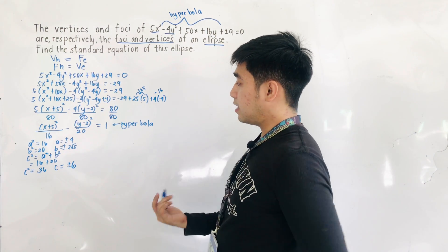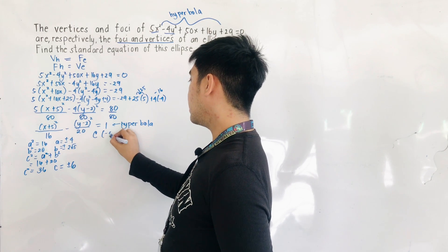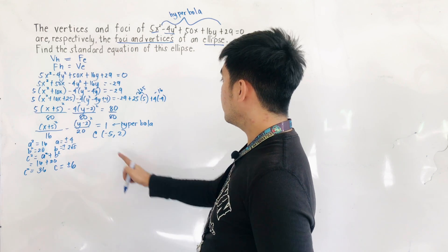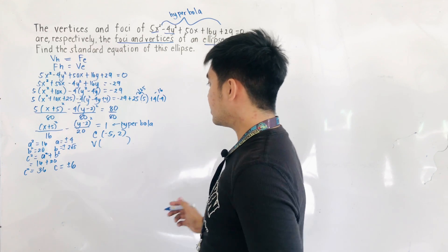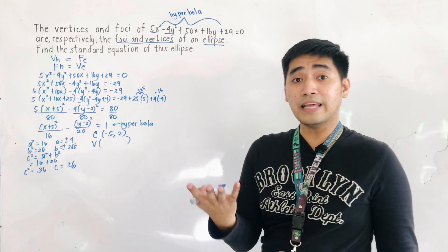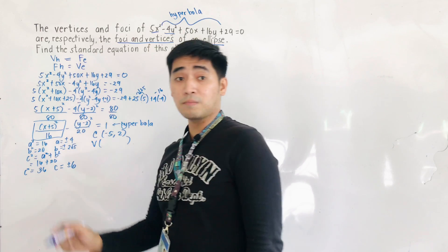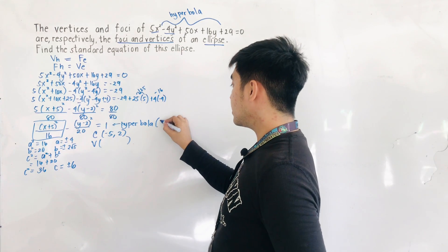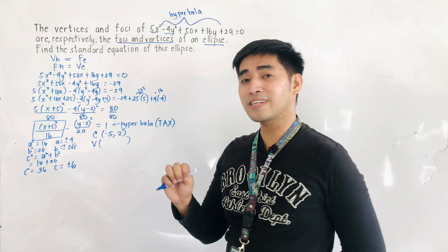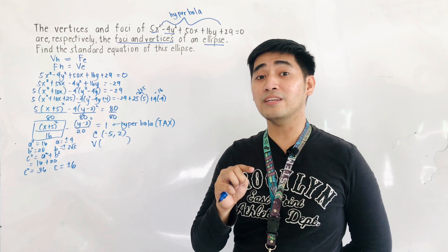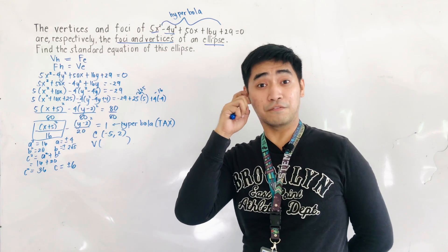These are the values of a, b, and c. The center is located at (negative 5, positive 2). Since the positive term comes with x, this is a horizontal transverse axis hyperbola. Therefore, to get the vertices and foci, we change the x-coordinate of the center using h plus or minus a (or c), and keep k.